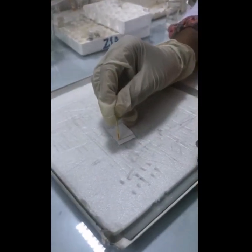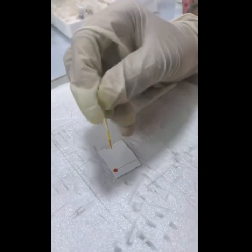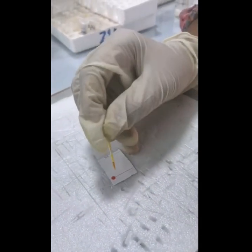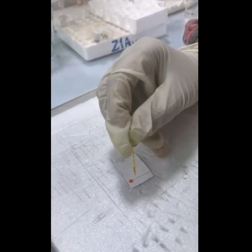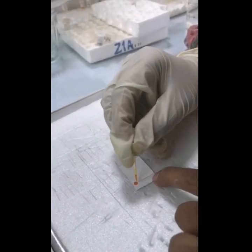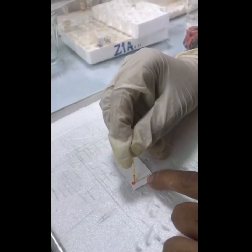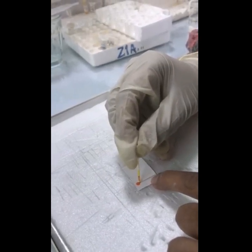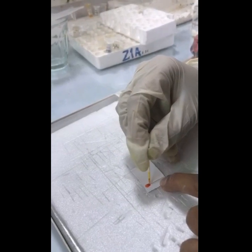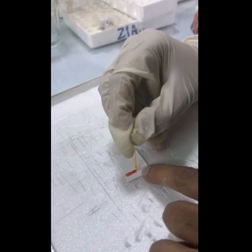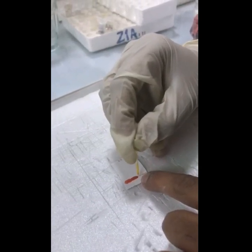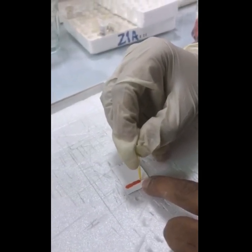Then I loaded the solution that I prepared on a TLC plate on its baseline. First, I loaded all the sample on the TLC baseline. When it dried, I again loaded the sample on it, and in this way all my sample was loaded on the TLC plate.